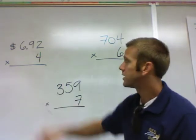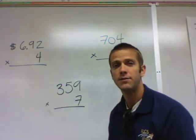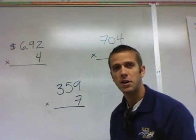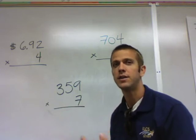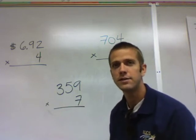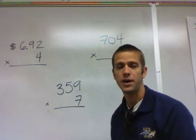$6.92 times 4, instead of adding $6.92 plus $6.92 plus $6.92 plus $6.92, you can just multiply it times 4 as a shortcut.